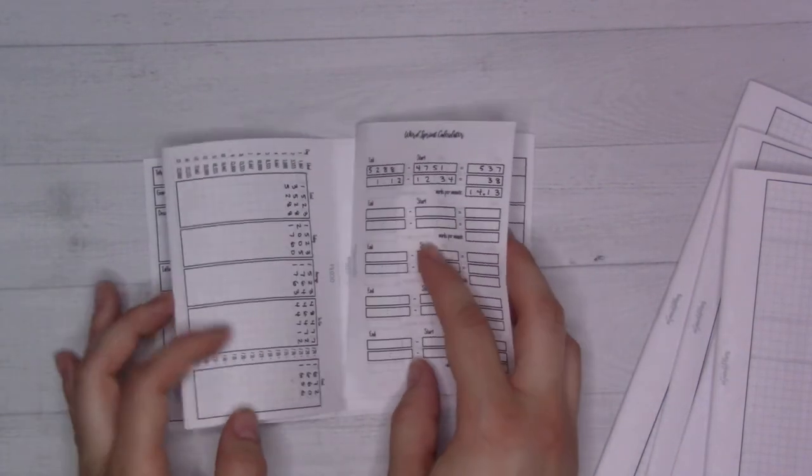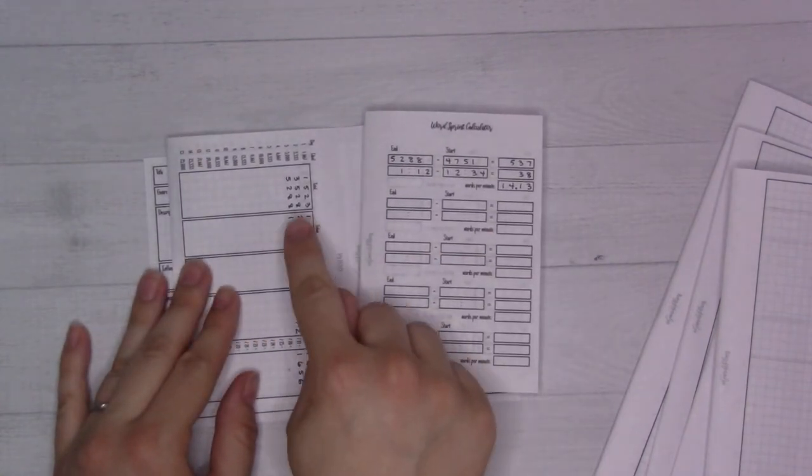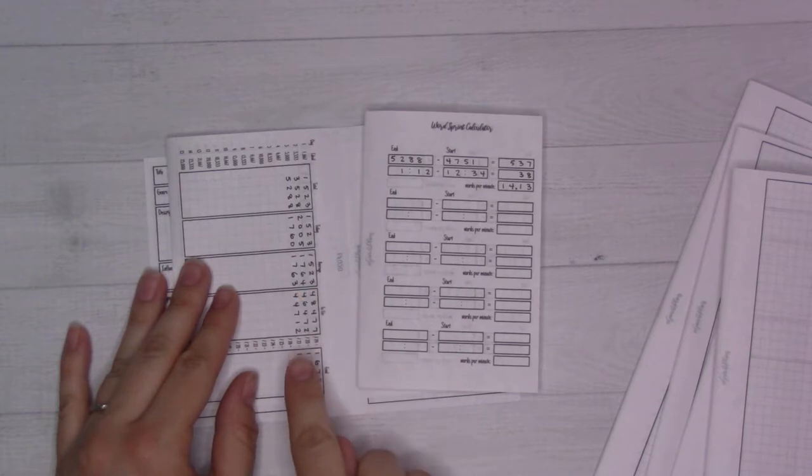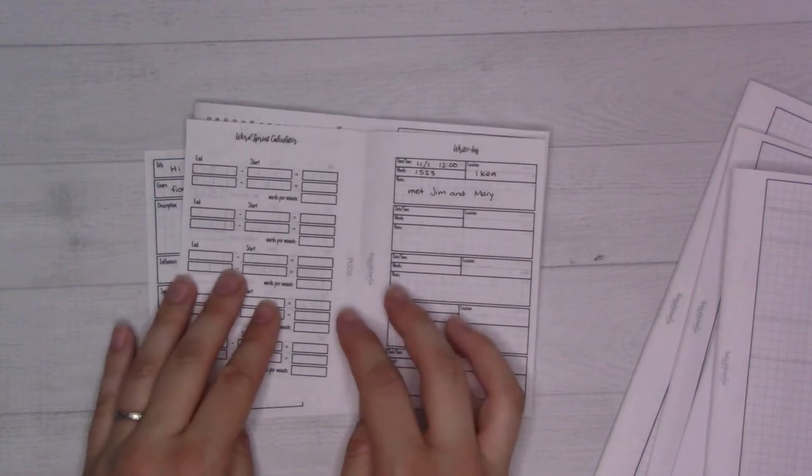Also, can I just say, if this was me, I would absolutely be highlighting numbers in green if they were above my goal and in red if they were below my goal and stuff like that. But that's just me.